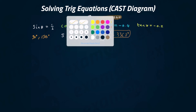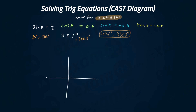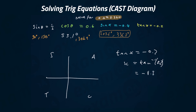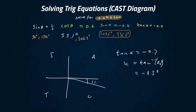tan x equals minus 0.2. We write the CAST diagram, write tan x equals minus 0.2, and solve for the principal value. Put shift tan of minus 0.2 into your calculator and you get minus 11.3 degrees.